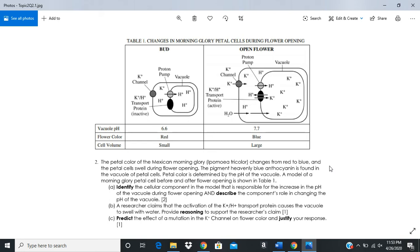They're asking you for Letter A: what is the cellular component in the model that is responsible for the increase in the pH of the vacuole during flower opening? If you look at this, it's pretty clear that the change in pH is the result of this transport protein - this potassium-hydrogen transport protein. If you notice what's happening, hydrogen is leaving the cell. What that does is it lowers the concentration of hydrogen ions in the vacuole, which means the pH goes up. Its role is to reduce the amount of hydrogen ions because hydrogen ions are being pulled out and potassium is being pushed in.